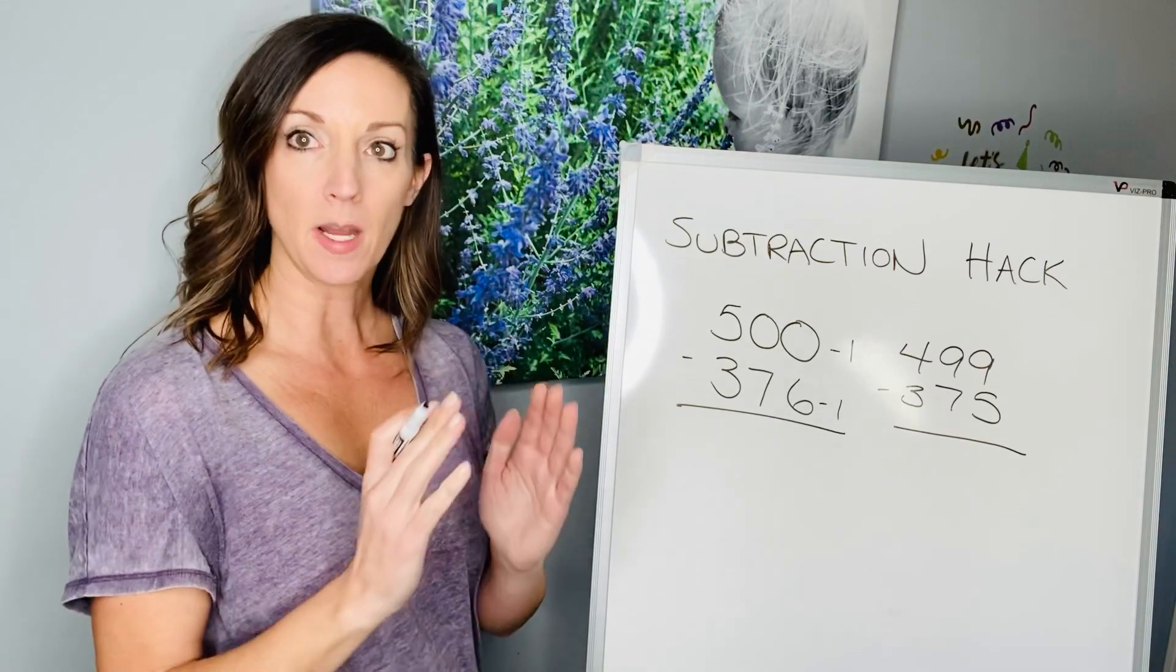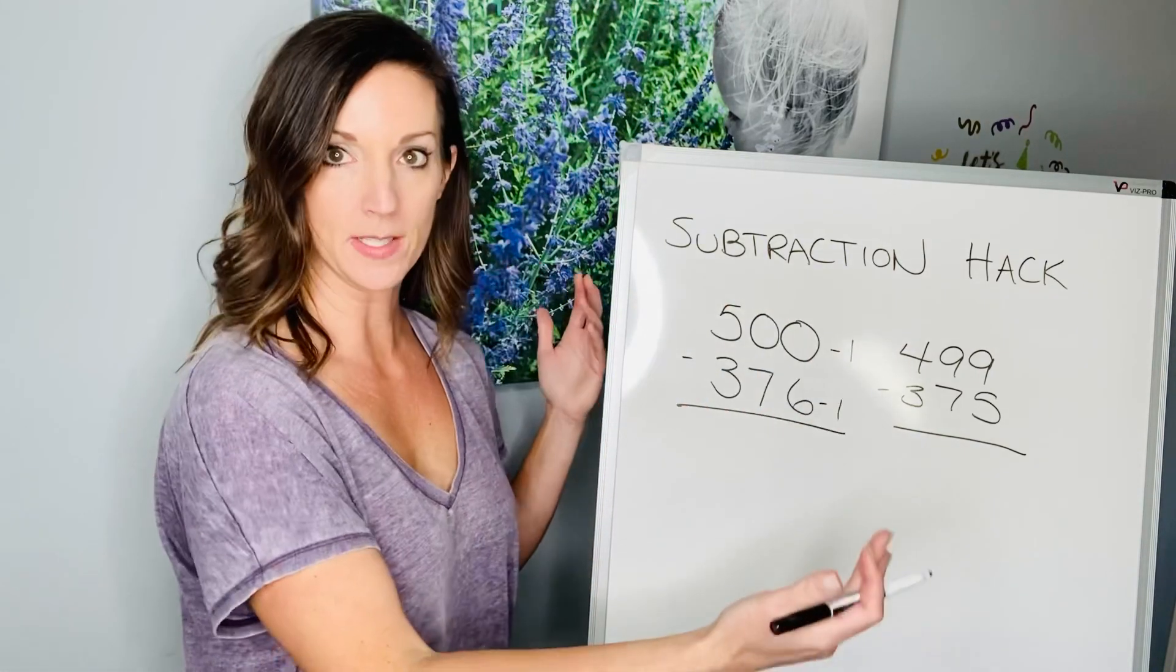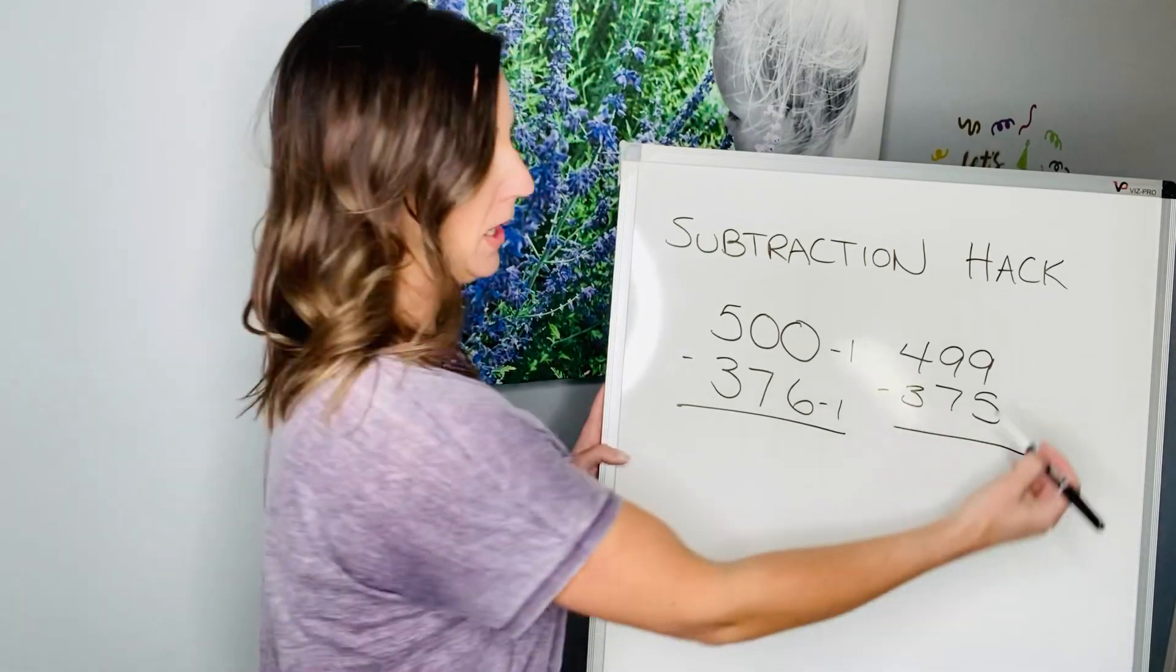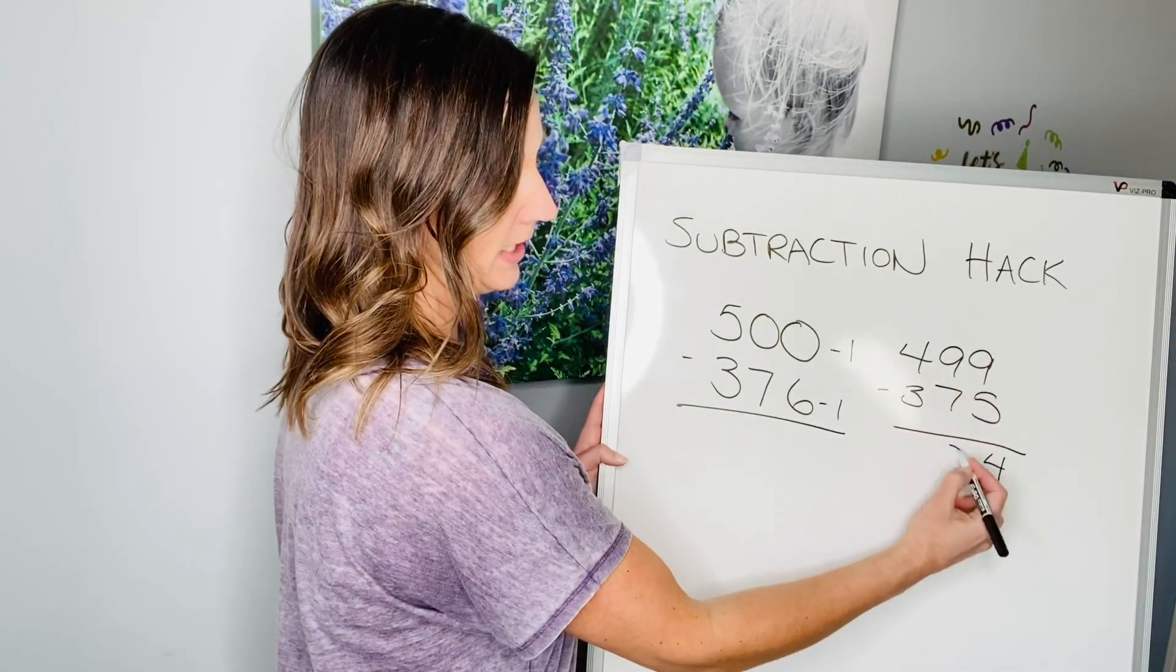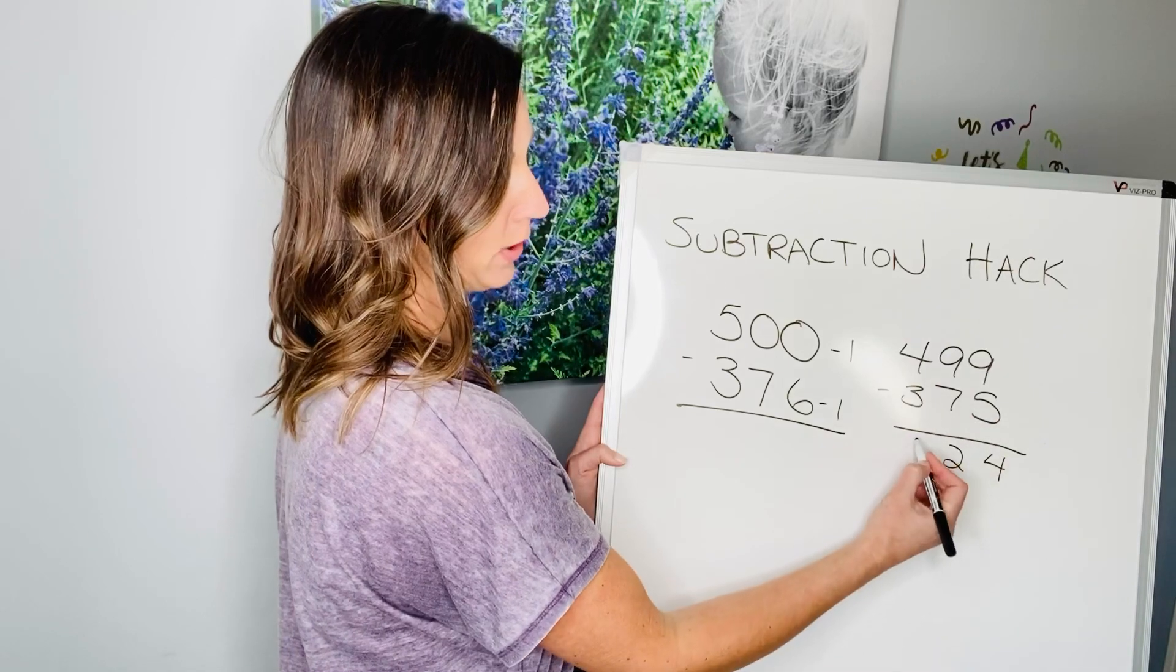Because as long as the numbers are the equal distance apart, you can subtract now, and now we don't have to regroup. 9 minus 5 is 4. 9 minus 7 is 2. 4 minus 3 is 1.